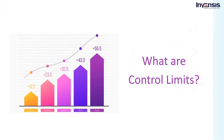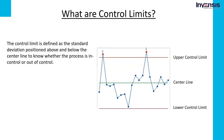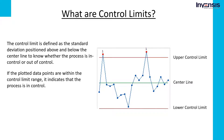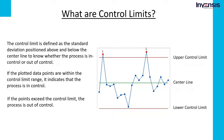The control limit is defined as the standard deviation positioned above and below the centerline in a control chart for a process. If the plotted data points are within the control limit range, it indicates that the process is in control. On the other hand, if the points exceed the control limit, the process is out of control. The control limits are based on process variation and are determined from historical data. By comparing the data with these lines, you can conclude whether the process is in control and consistent, or out of control and unpredictable. When a control chart indicates the process is under control, it means it is stable enough and doesn't require any changes.